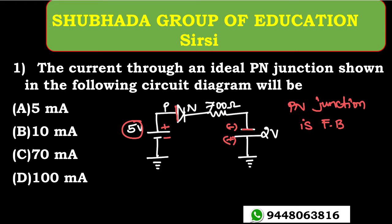As it is in the forward biased condition, it has to be treated as a short circuit. So we make the PN junction a short circuit.